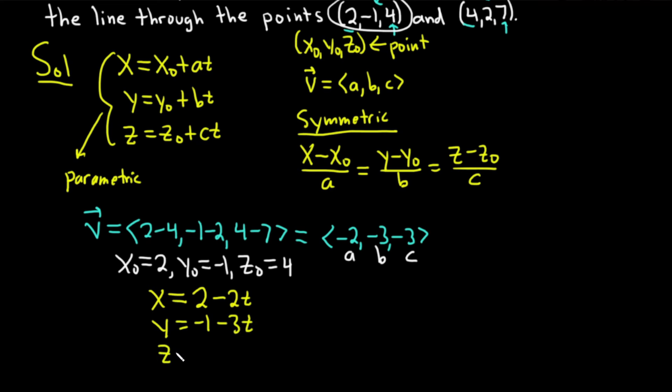And then z = z₀, which is 4. And then we have the minus 3t, that's our c. These would be our parametric ones.